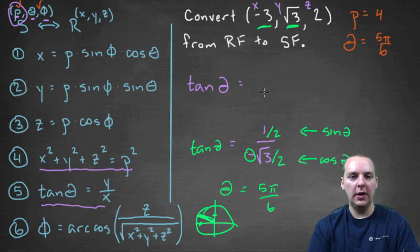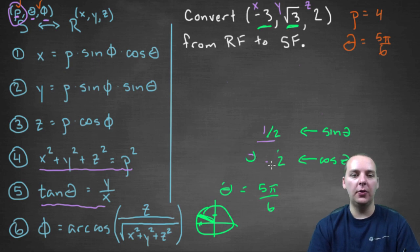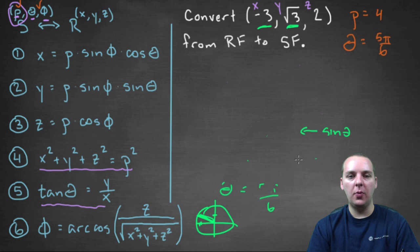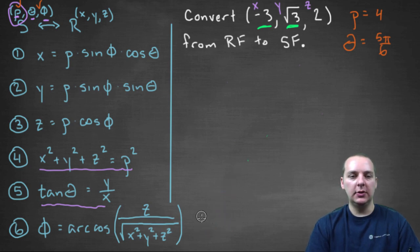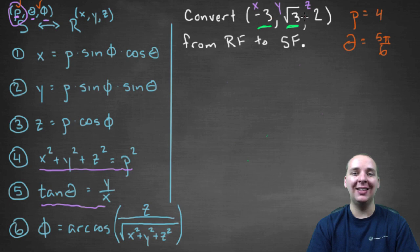Alright, while I'm erasing again, go ahead and look at our conversions there. Do you see anything that might help us find a phi? And there's more than one right answer. In a roundabout way, I think number one could, so could number two, so could number three. Really any of those, number six could. Anything that has a phi I think would work because we've already found everything else. We've got x, y, z, rho, and theta. So anything that has a phi is fair game.